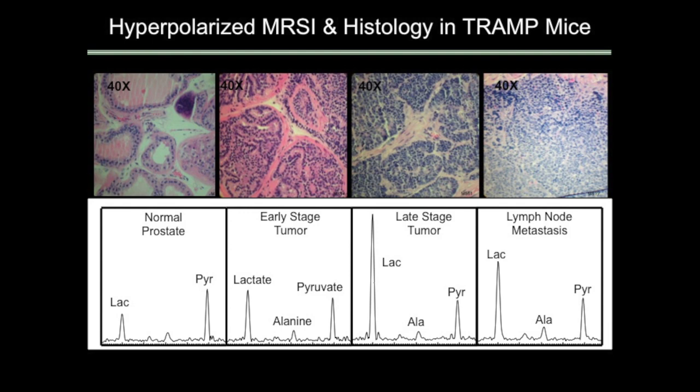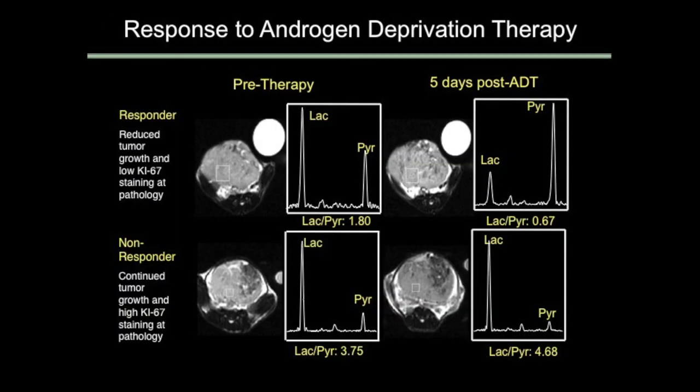The next thing we investigated was whether we could look at response to therapy. These are two relatively large tumors, pre-therapy and then five days post-androgen deprivation therapy, one of the most common therapies for prostate cancer. The first is a responder — we see reduced tumor growth and low MIP staining in the pathology. There's not much difference in the size of the tumor because this is only five days. But if we look at the ratio of lactate to pyruvate, we see a complete reversal of relative signal intensities from a 1.8 ratio to 0.67. For the non-responder, there's very little change in relative intensities, and the ratio even gets a little bit higher.